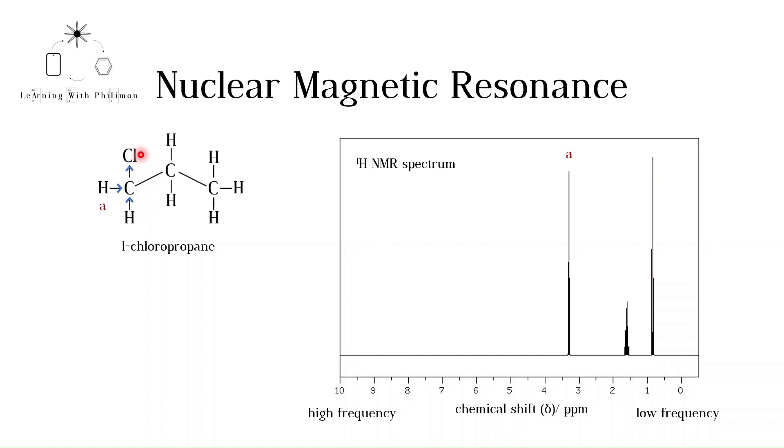They experience the external magnetic field more. The energy gap between the two orientations widens and so a higher frequency is required. In NMR spectra, hydrogen nuclei near electronegative atoms, carbonyl groups, or carbon-carbon double bonds will appear on the left of the spectrum at higher ppm.